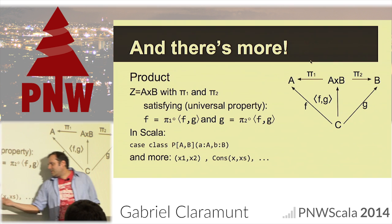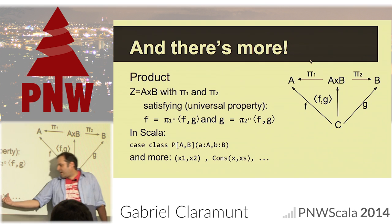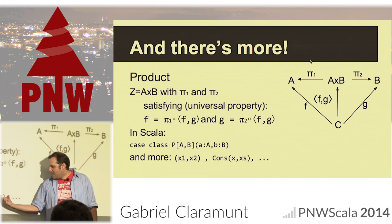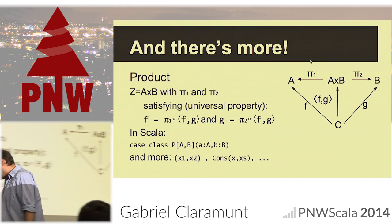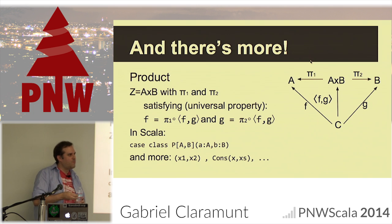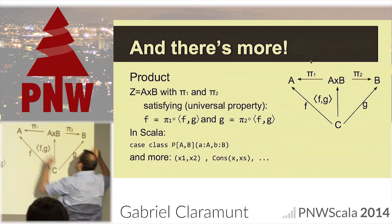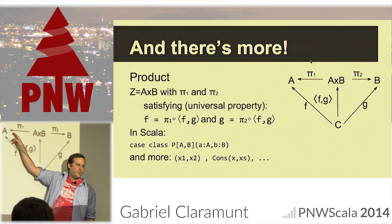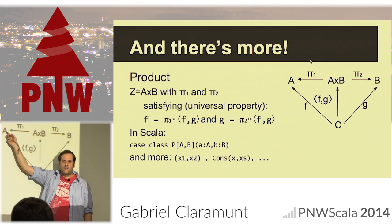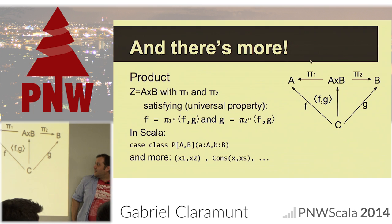A tuple is even called a product in Scala. Projections are just these two arrows — you get the product and one projection extracts one of your original values, while the other projection extracts the other value. In the relational database model, a selection is also called a projection — even in the relational model.